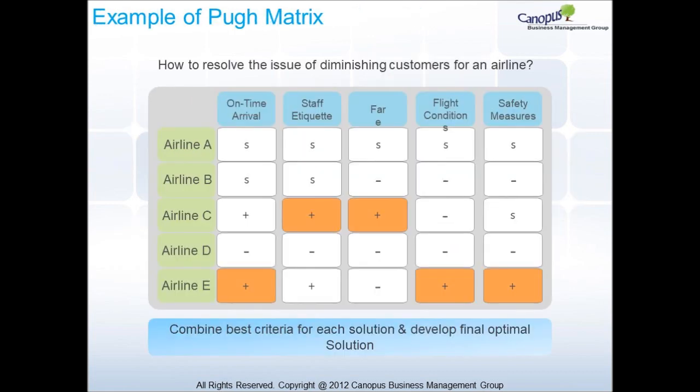Here is an example of a Pumatrix showing how to resolve the issue of diminishing customers for an airline. The highlighted cells represent the best combination of features for all airlines. Please review and move forward.